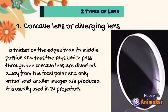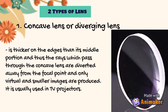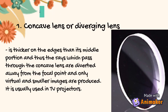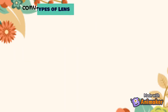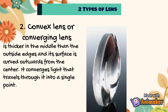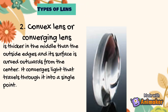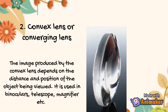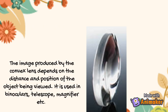Now let's move on to the two types of lenses. The first is a concave lens or diverging lens. It is thicker on the edges than its middle portion, and the rays that pass through it are diverted away from the focal point, producing only virtual and smaller images. It is usually used in TV projectors. The second is a convex lens or converging lens. It is thicker in the middle than the outside edges and its surface curves outward from the center. It converges light through its width into a single point — parallel rays of light join at the same point after passing through it. The image produced depends on the distance and position of the object. It is used in binoculars, telescopes, magnifiers, and others.